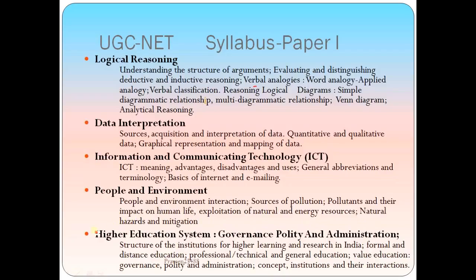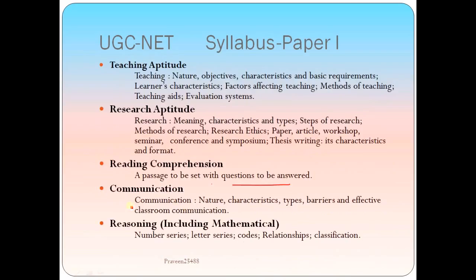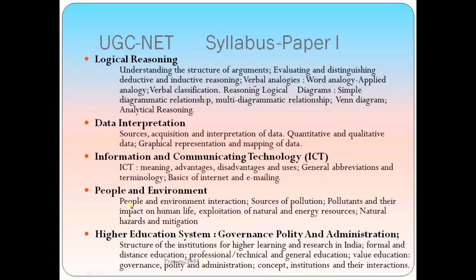Natural hazards and mitigation are also covered. Higher education system includes governance, quality and administration, structure of institutions for higher learning and research in India, formal and distance education, professional, technical and general education, value education, and concept institutions and their interactions. There are particularly 10 topics in Paper 1 and 50 questions to attempt, so you can expect 5 questions from each topic.